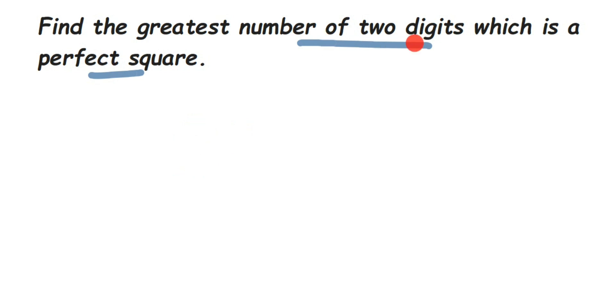We have to find the greatest two-digit number. We know the greatest two-digit number is 99, but 99 is not a perfect square.